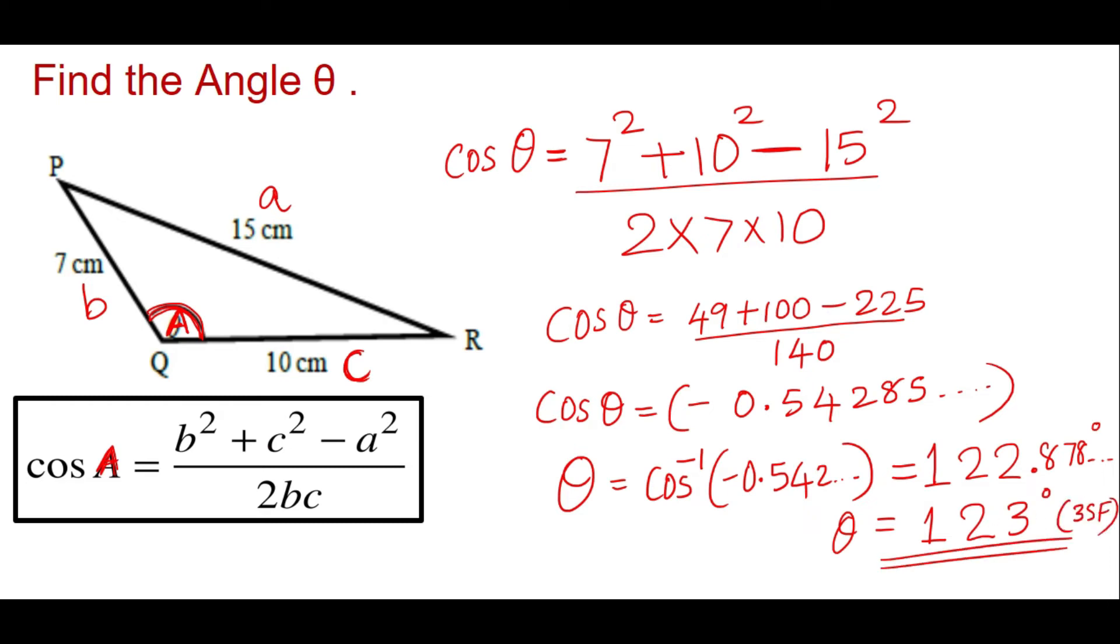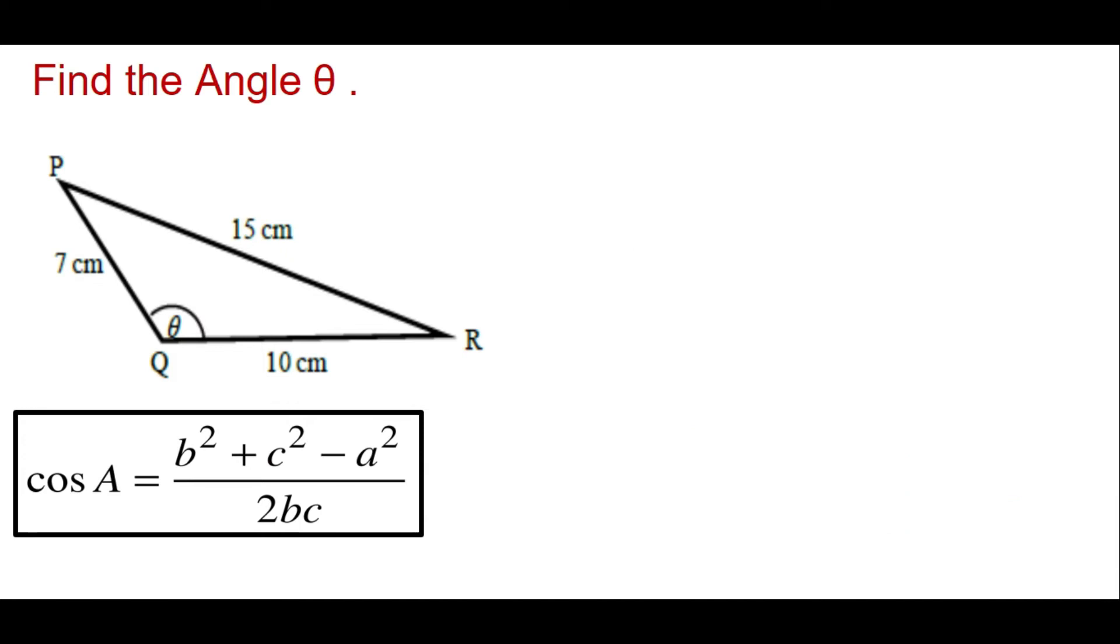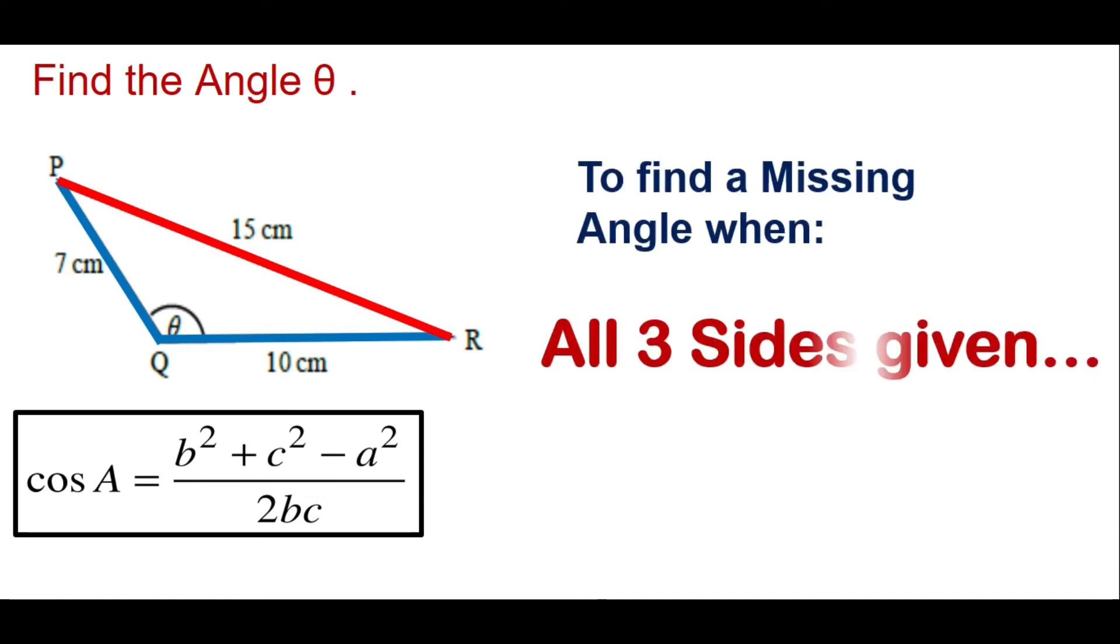So a quick summary: when to use the cosine rule, to identify the b and c which is the arms of the angle that you're going to find and a will be the side opposite to the missing angle. And we use the cosine rule to find the missing angle when all three sides are given.